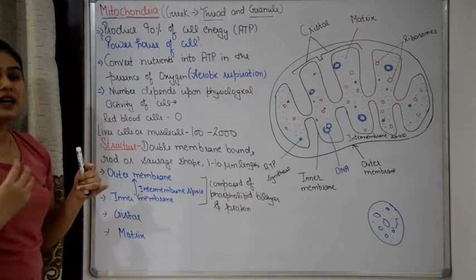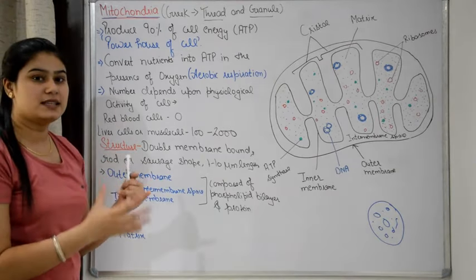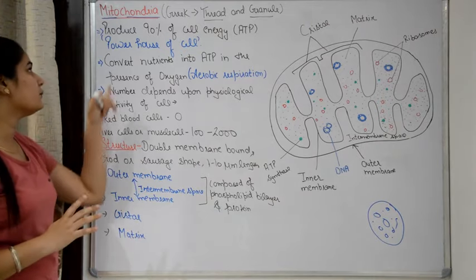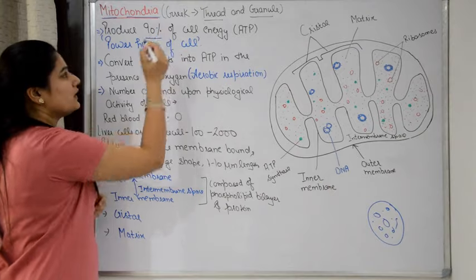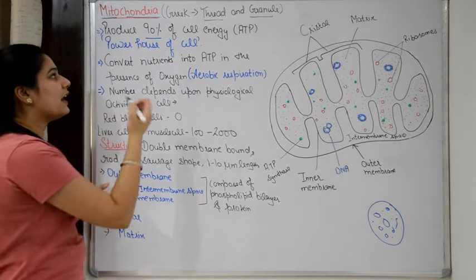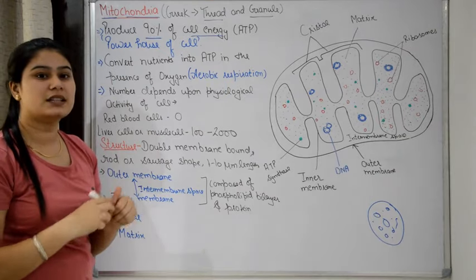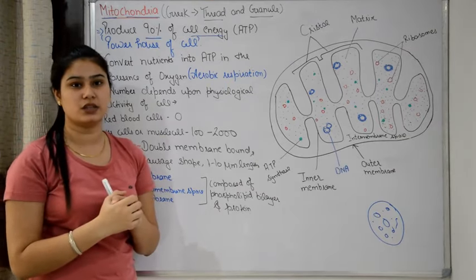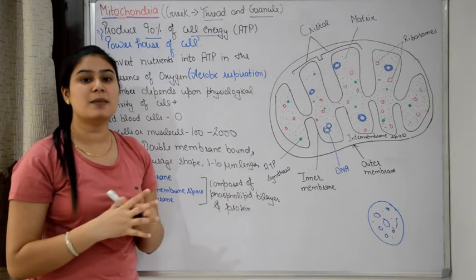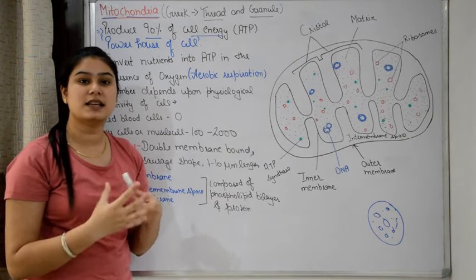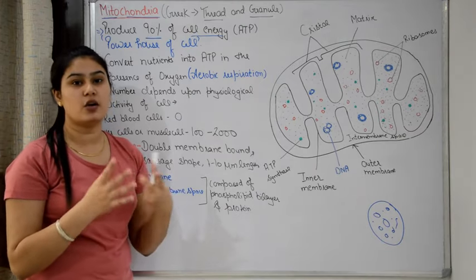So what is mitochondria's important function? Why does the cell need it? What is its significance in the cell? Mitochondria produces almost 90% of cell energy. In the cell there are many metabolic activities, such as cell growth, cell division, or other functions of contraction.